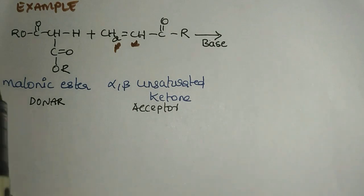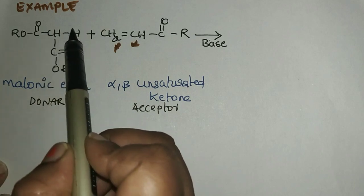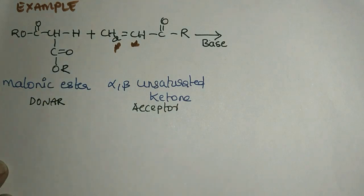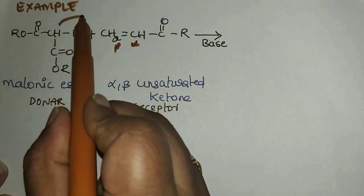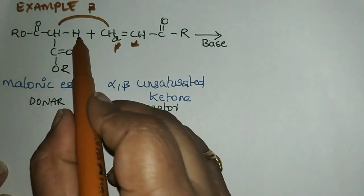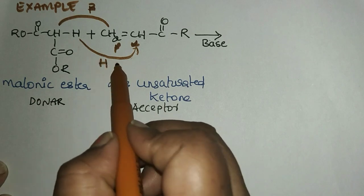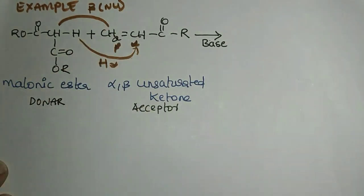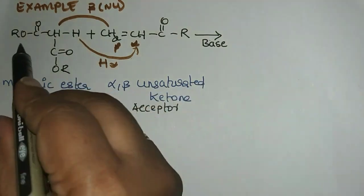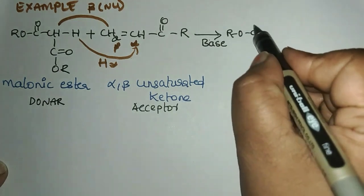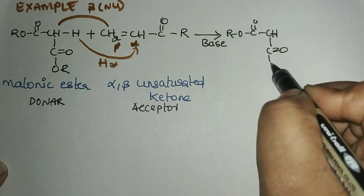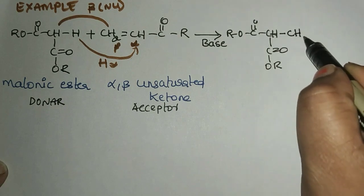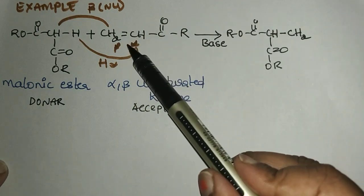Here is a simple trick to write the addition product. In the active methylene compound, a hydrogen leaves the methylene group to give rise to a nucleophile. So we have a nucleophile and a hydrogen. The nucleophile attaches to the beta carbon, and the hydrogen attaches to the alpha carbon. Remember, the alkene is always the site of addition reaction.